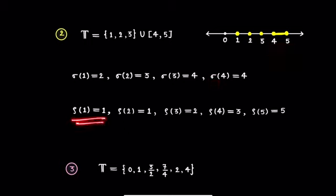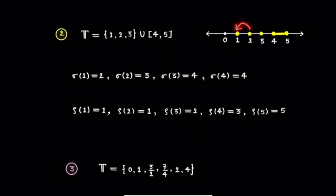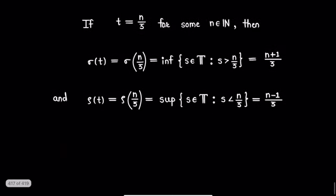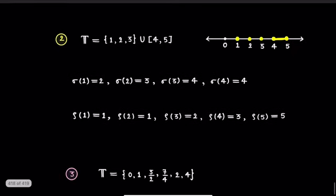For the backward jump operator: rho(1) = 1, rho(2) = 1, rho(3) = 2, rho(4) = 3, and rho(5) = 5, since we cannot determine the supremum of the corresponding set for the number 5 in this time scale.